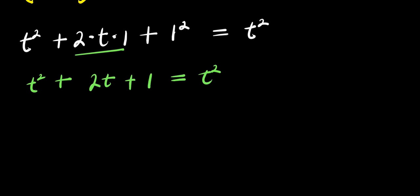So what we are going to do will be to move this t squared over here, so we have 2t plus 1 equals t squared minus t squared. So this crosses over and it becomes minus t squared.